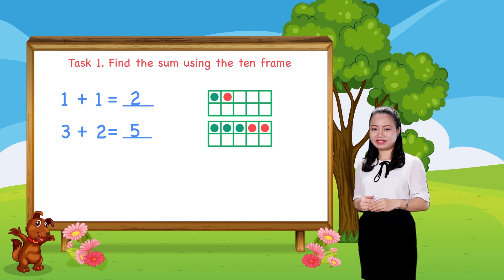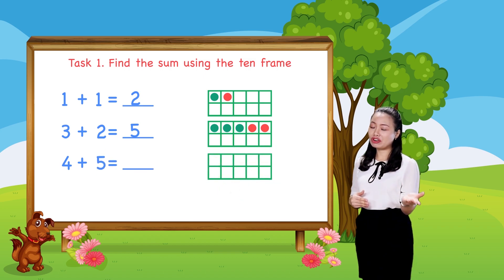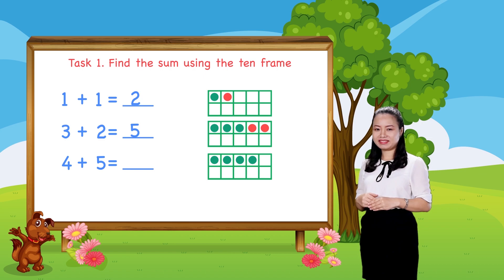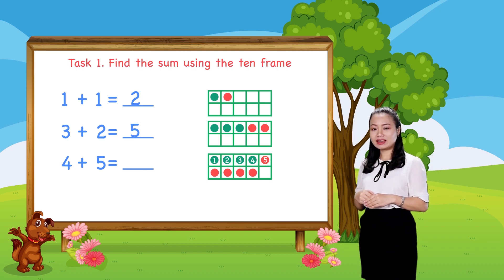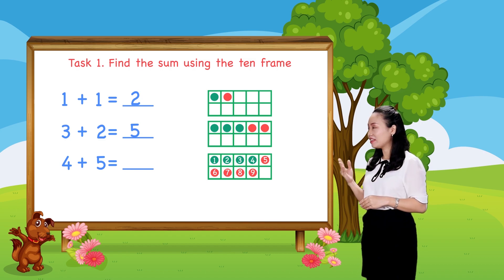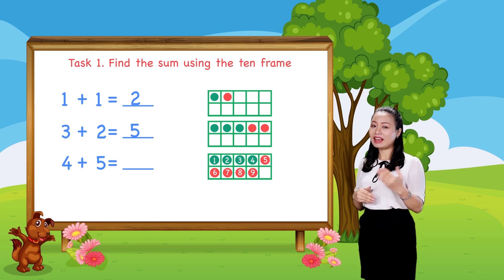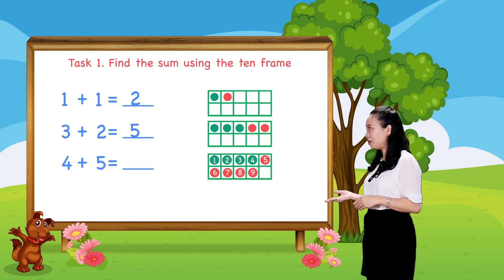Next, to find 4 plus 5, we draw 4 dots. Then, 5 more dots in the 10 frame. Then, count the total number of dots to find the sum. Let's count. 1, 2, 3, 4, 5, 6, 7, 8, 9. So, 9 dots in total. Therefore, 4 plus 5 equals 9.